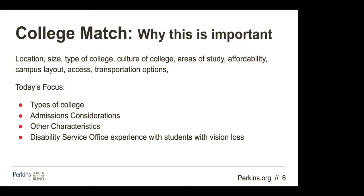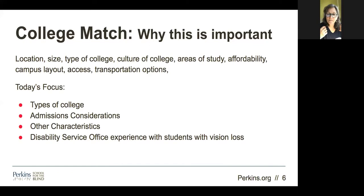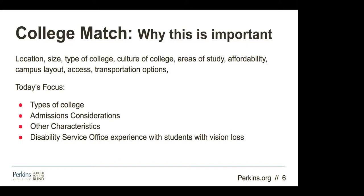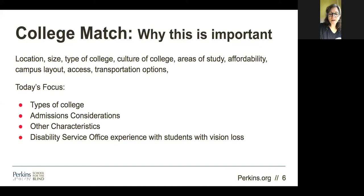Areas of study matter — if you're interested in hospitality or event planning and you're looking at colleges that don't offer that, it may not be a good match. Faith, you asked about the best college for your vision loss — I'm going to answer that. There isn't one best college for kids with visual impairments. It's a combination of factors including affordability, campus layout — is it complex, is it in the middle of a city you've never lived in? — and access and transportation options.